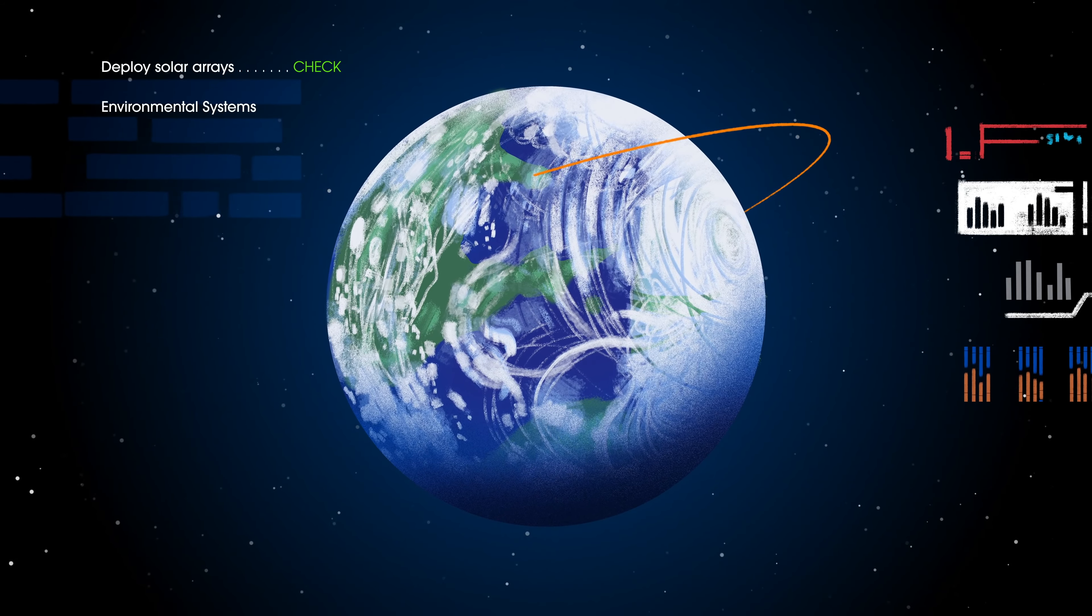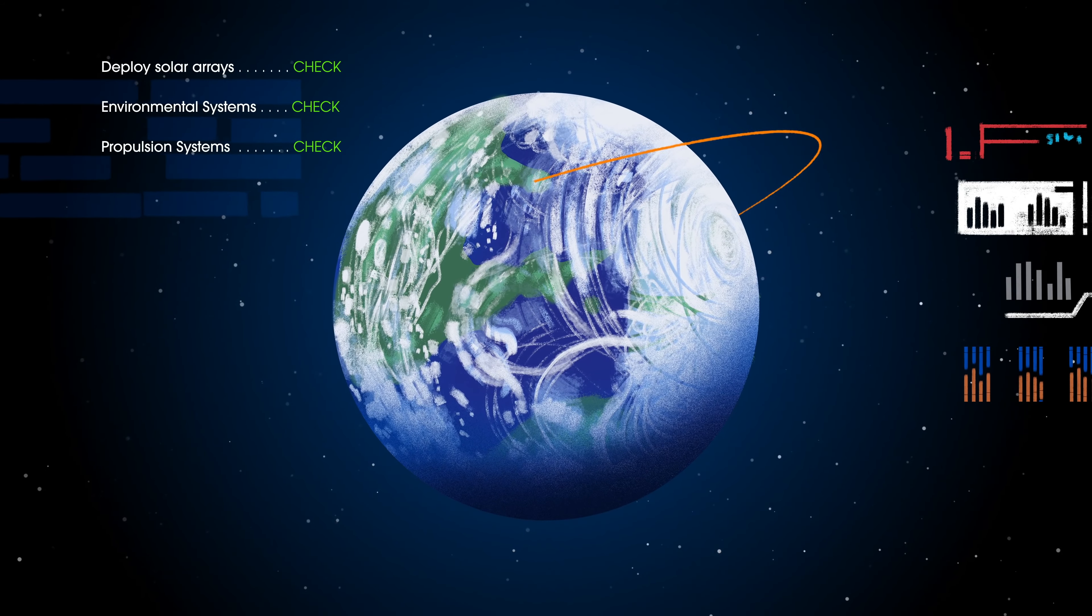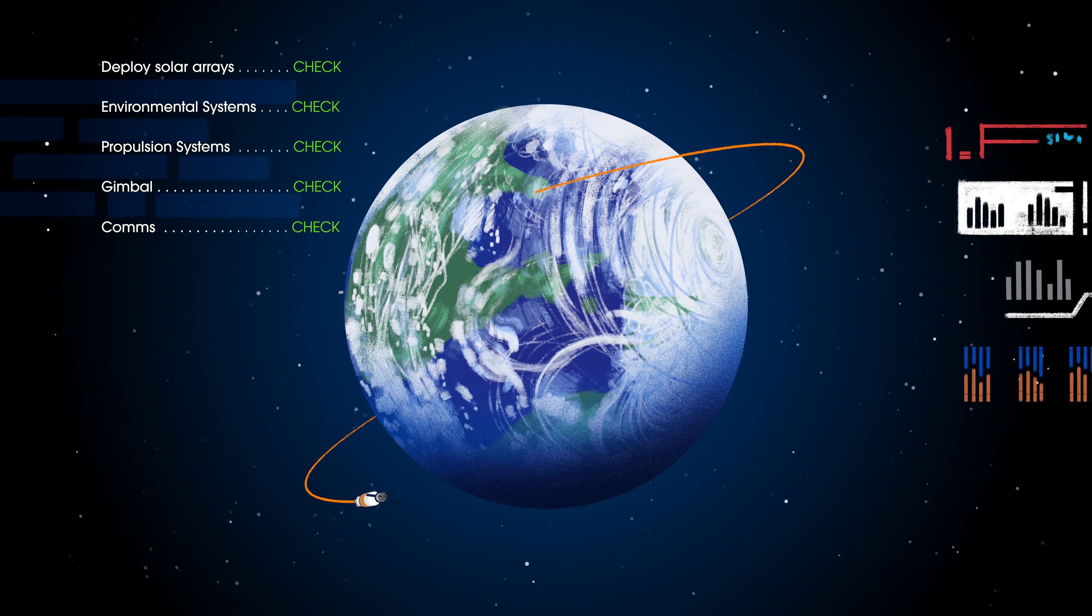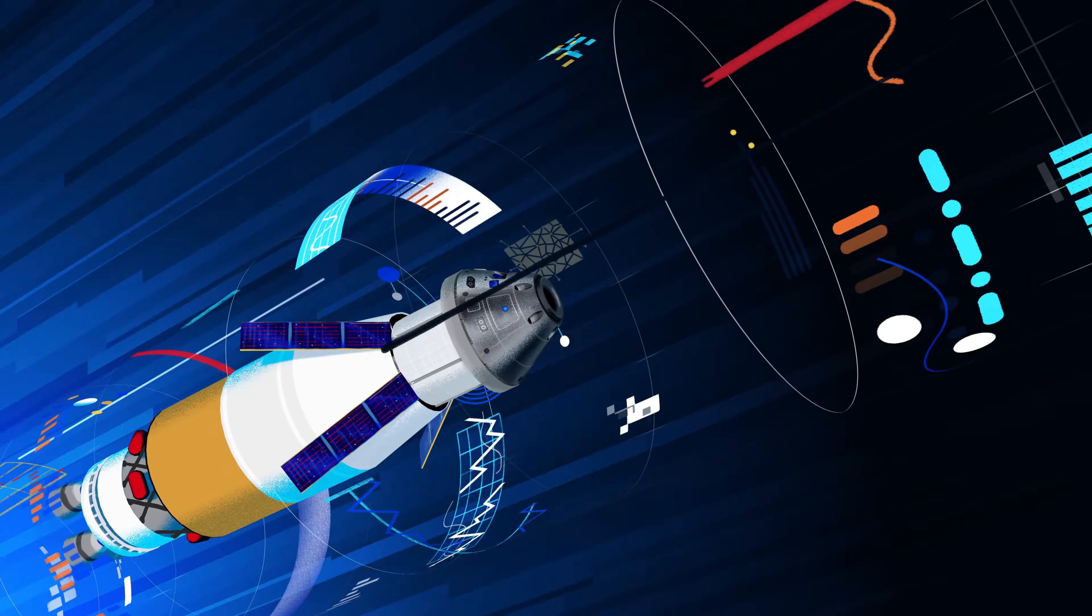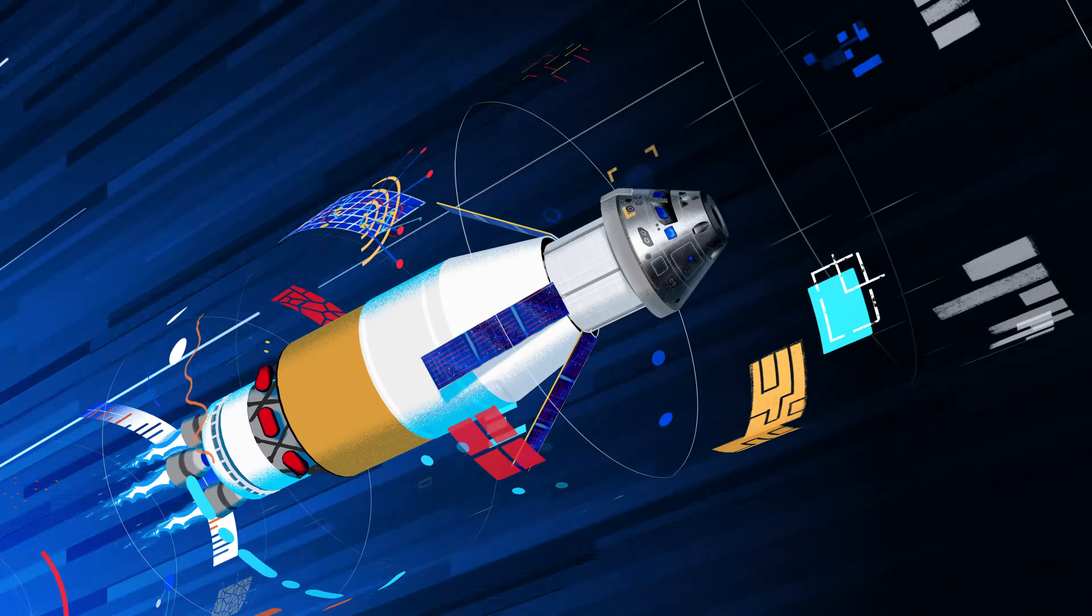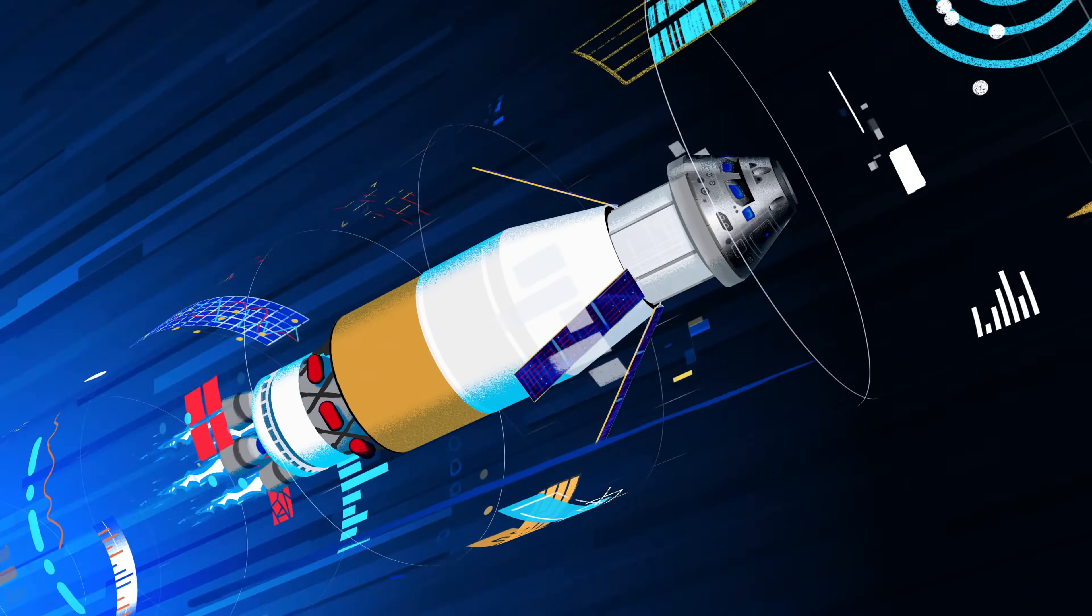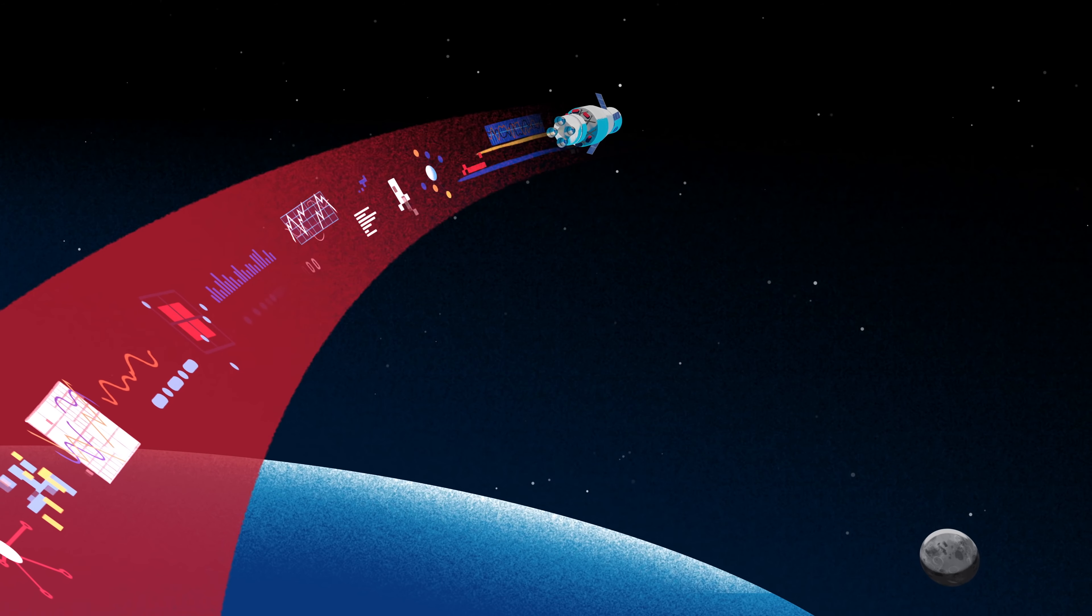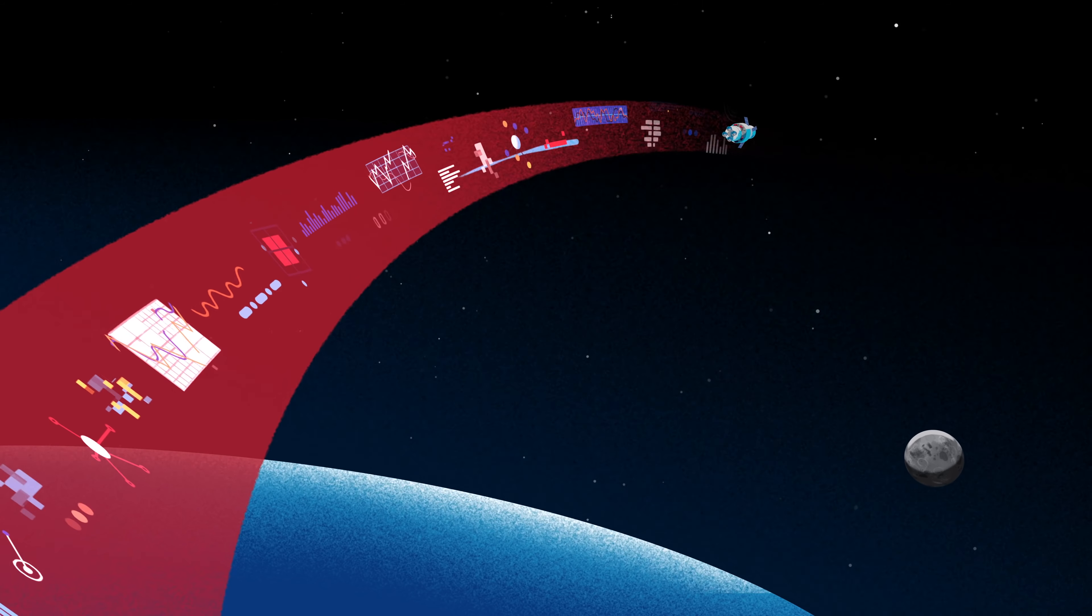Here, the crew reconfigure the spacecraft and check systems to confirm everything is ready for deep space travel. With a go from mission control, the crew reignite the exploration upper stage engines to leave Earth entirely. The exact timing of this maneuver is critical to reach a speed that can escape Earth's gravitational pull, but also put Orion on a course that will intersect the Moon days later.